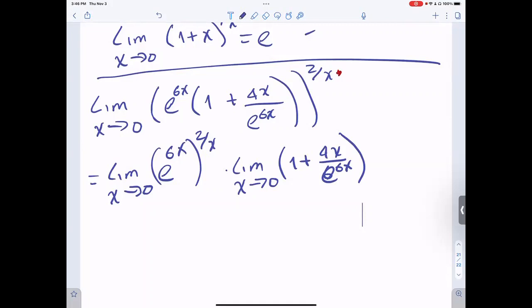And we write the reciprocal, sorry, of this, which is e to the 6x over 4x, and then I'm going to close everything and give it the power of 2.